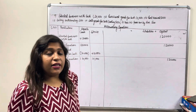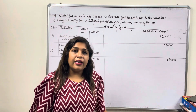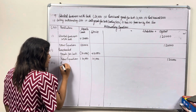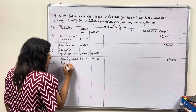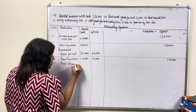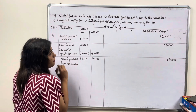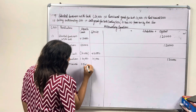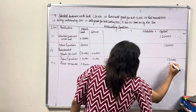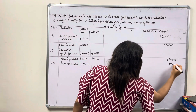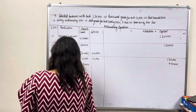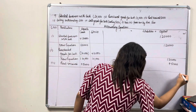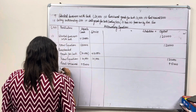Third transaction: rent received. When rent is received, cash increases — cash plus 5,000. Capital also increases — capital plus 5,000.